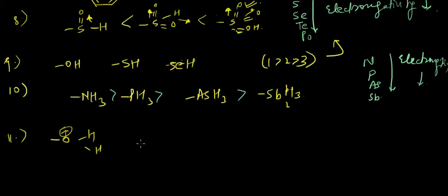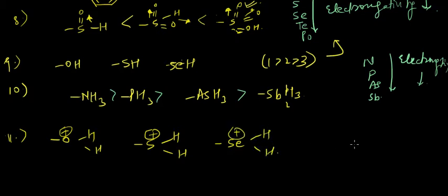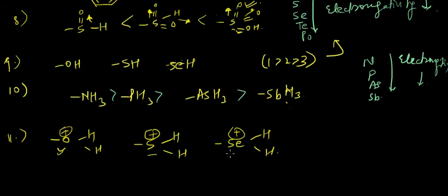Now consider the effect of a positive charge. Imagine a beggar who has some food — if you take that food away, he becomes even more hungry. Similarly, the oxygen atom already has the highest electronegativity compared to sulfur and selenium, and if you additionally give it a positive charge — taking away its electrons — it becomes even more electron-hungry. So more positive charge on a more electronegative element means even greater electronegativity and hence greater minus-I effect.